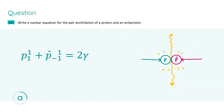In part four we're asked to write the nuclear equation for the pair annihilation of a proton and an antiproton. On the left-hand side we have the situation before collision: the proton and antiproton travel with equal speeds in opposite directions, so the total initial momentum is zero. Once they collide they annihilate, converting all their mass into energy — two gamma ray photons on the right-hand side. There are two photons because momentum must be conserved: since initial momentum was zero, the final momentum must also be zero, so two photons travel in opposite directions.